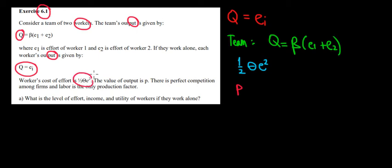We also have the cost of effort, and the value of the output they produce is equal to P. In part A, we find the effort level, income, and utility if they work alone. Since the problem doesn't mention the company observing them, workers decide their effort level based on their own utility. If the company observed them, it would set a contract requiring a certain effort level — but here, workers care only about their own utilities and decide for themselves.